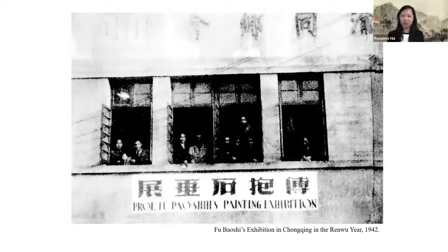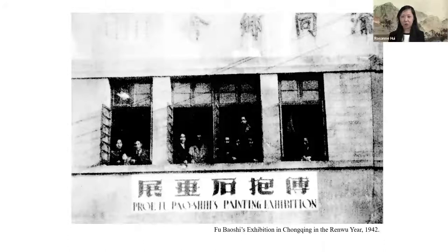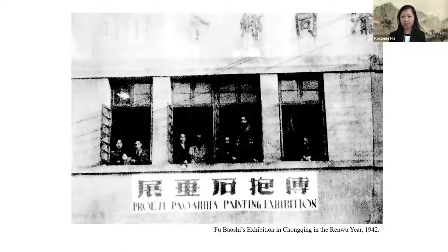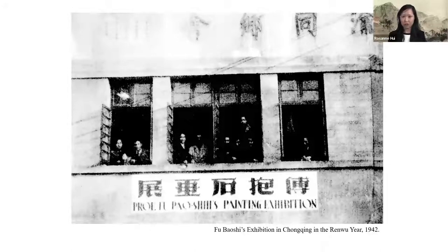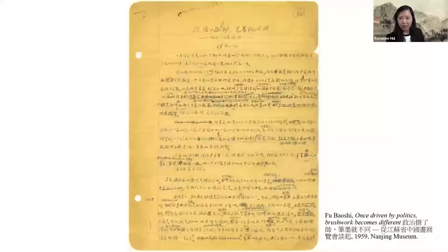In the same preface, Fu revealed where he would go for inspiration — classical art history themes considered commemorable by ancestors, such as gathering at the Orchid Pavilion. He was confident that even though subject matters were old, he painted them with new compositions. Under the new leadership's policy, focusing only on classical themes would be unthinkable. His 1959 essay 'Once Driven by Politics, Brushwork Becomes Different' explains: classical art and philosophy taught artists to avoid real life and the working class, which was contrary to the state's art policy.